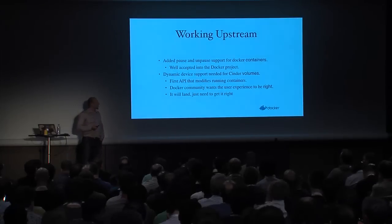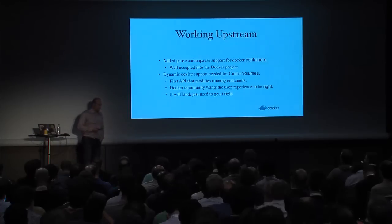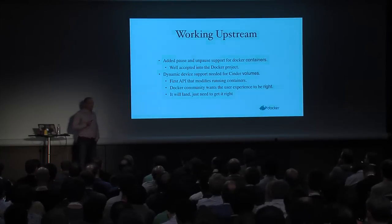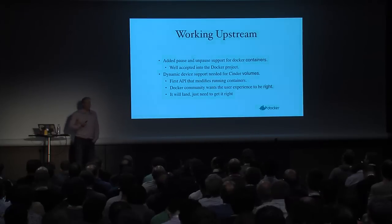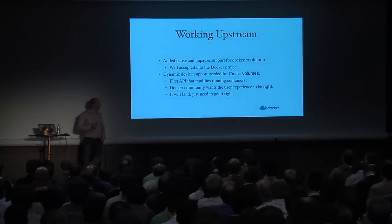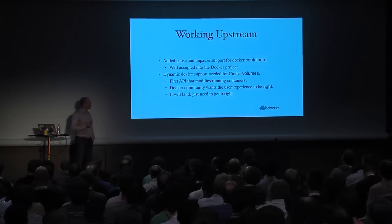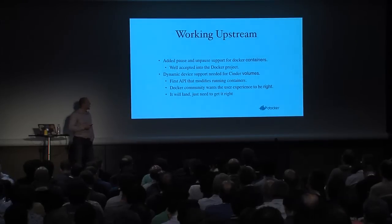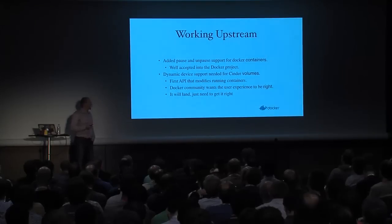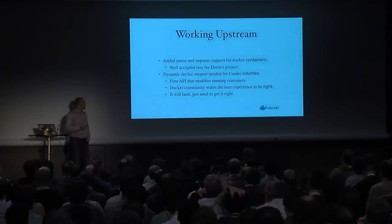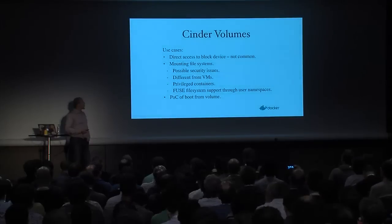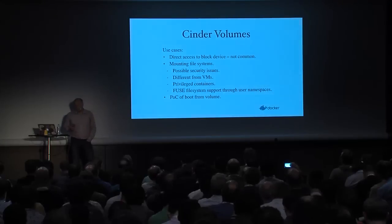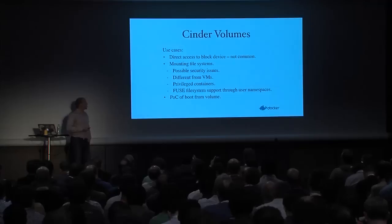The next big area lacking was volume support — Cinder volumes. I've written two different pull requests for this. It's not received quite as well as pause and unpause. The big issue was that it was the first API that actually modifies running containers, and Docker was a little worried about that change and how it will affect the user experience. I have another pull request in now, and I've been assured by core Docker folks it will go in — they're just trying to get the experience right and make sure the infrastructure is in place. We have Cinder volumes functioning locally with all my patches in place.